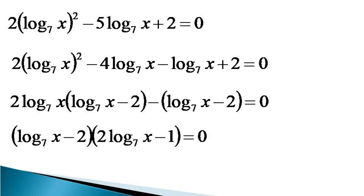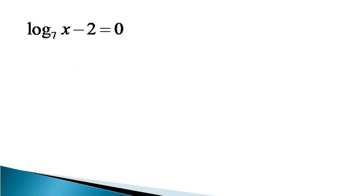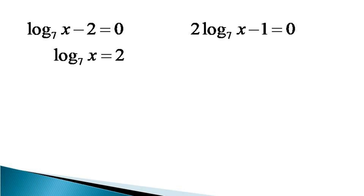This gives us two solutions: log x to the base 7 minus 2 equals 0, and 2 log x to the base 7 minus 1 equals 0. From these two equations, we get the values of x. Considering the first solution, log x to the base 7 equals 2, and from the definition of log, we get x is equal to 7 raised to the power 2.